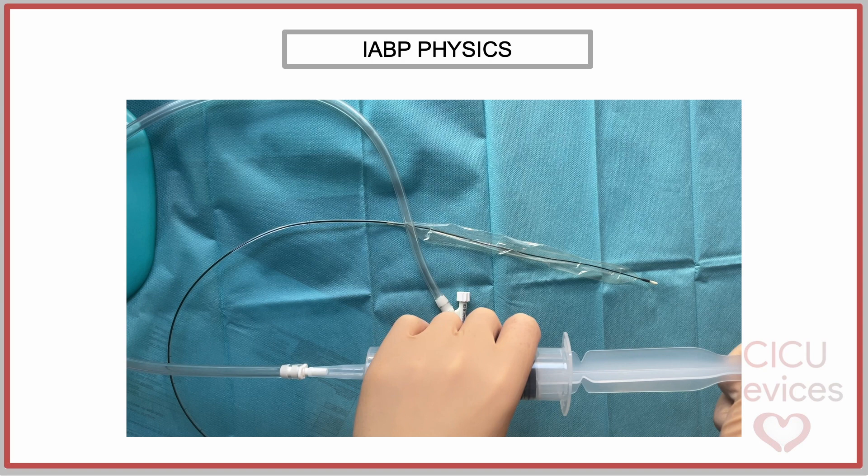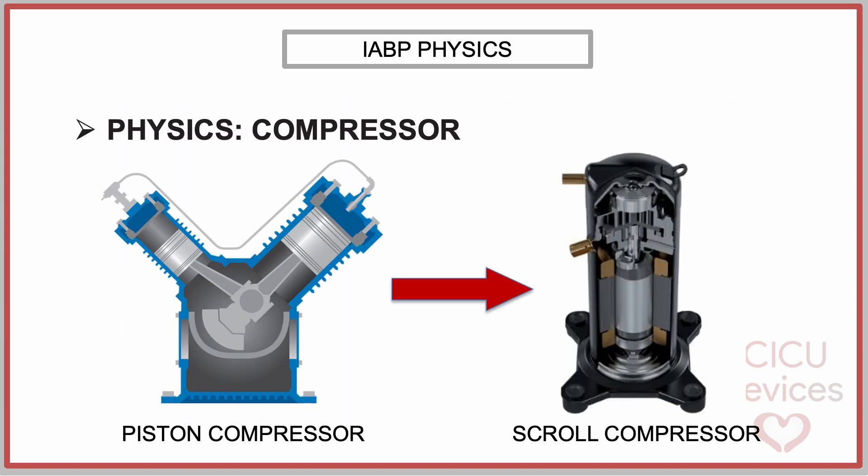This same effect is achieved with a mechanical system that uses a compressor and a plunger or disc to introduce or withdraw helium from the catheter, causing the balloon to inflate and deflate, as we will see next. The first IABP driving consoles used a piston compressor to generate positive or negative pressure, which displaced the disc or plunger.